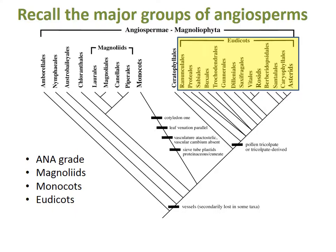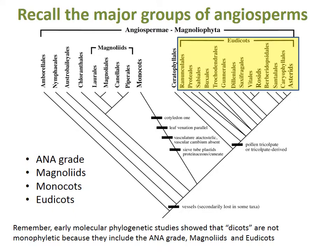Remember that the term eudicots is distinct from the term dicots. Early molecular phylogenetic studies showed that what people used to call dicots — plants that had two cotyledons — are not actually a monophyletic group. In fact, the plants referred to as dicots include members of the ANA grade, magnoliids, and eudicots. So the feature of having two cotyledons is more appropriately considered plesiomorphic, and while it can still be useful in identifying eudicots, you should be careful, just as with identifying monocots based on floral parts in groups of three.